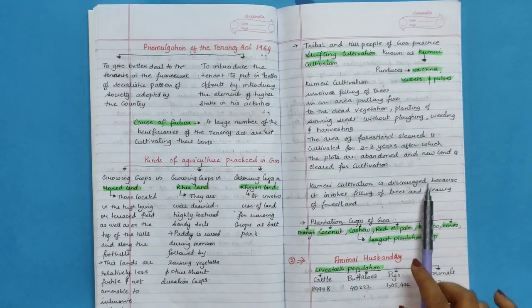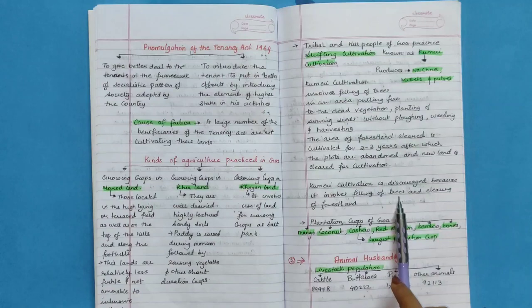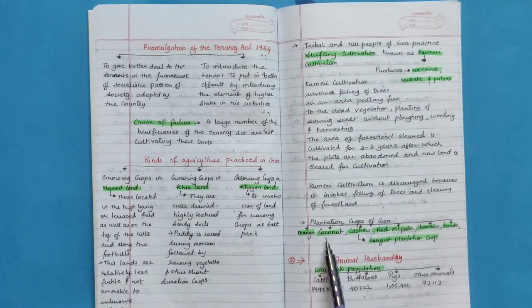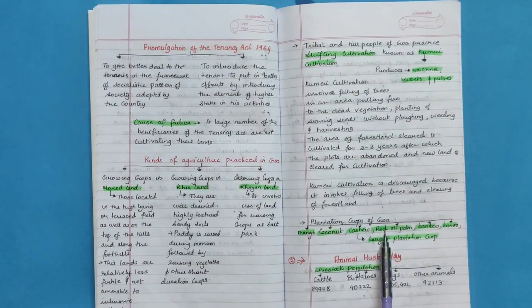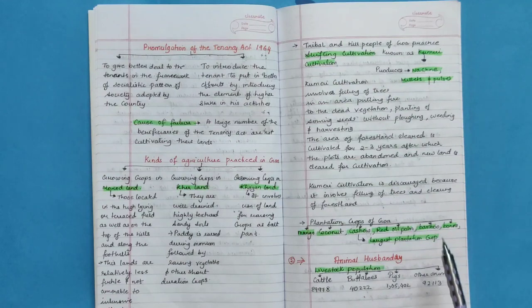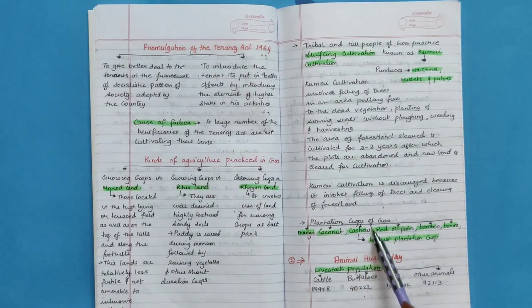Kumeri cultivation is discouraged because it involves felling of trees and clearing of forest land. Plantation crops of Goa: mango, coconut, cashew, red oil palm, bamboo, banana. Largest plantation crop is cashew.